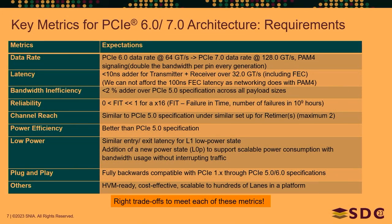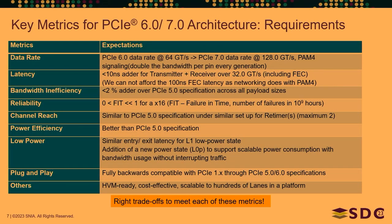Channel reach must remain the same as PCIe 5.0 — we don't want people to redo their platforms, given that keep-out zones exist because DRAM DIMMs need to be near CPUs and PCIe slots will be a little farther. Low power is very critical: with hundreds of lanes on a power-constrained platform, we need power management states no worse than the prior generation — similar entry/exit latency to the L1 state.